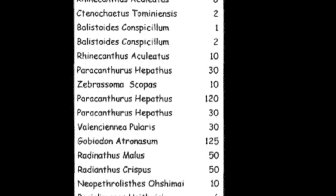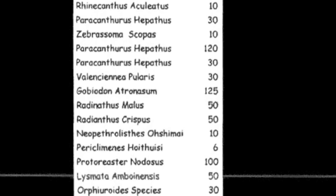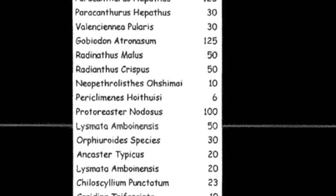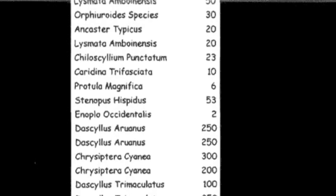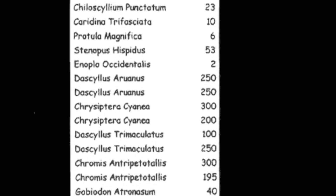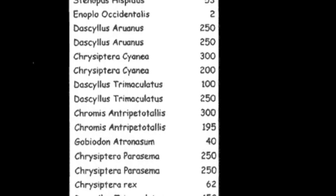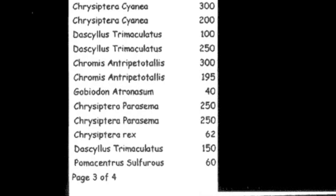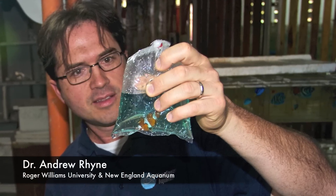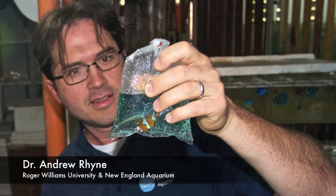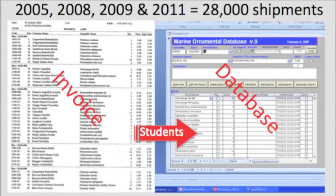The invoice is completed by the exporter in the source country and lists most fishes down to the species level. While the U.S. Fish and Wildlife Service archives these invoices, they are not entered into any database. So the first step to using this data was to actually extract it into a usable form. In 2008, NOAA approached Dr. Andrew Rine of Roger Williams University for help with the invoices. Rine received shipment declarations and attached commercial invoices coded MATF for 2004, 2005, 2008, 2009, and 2011.